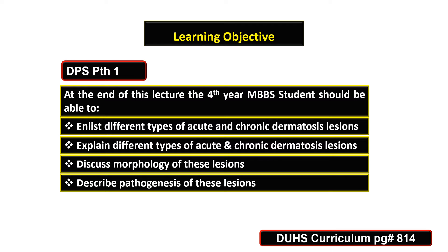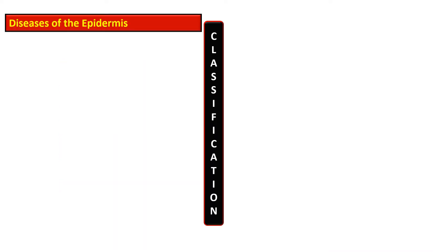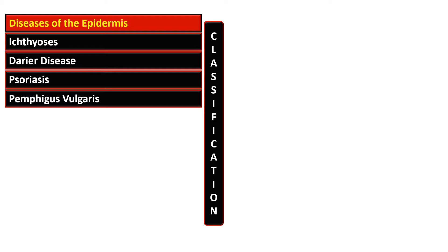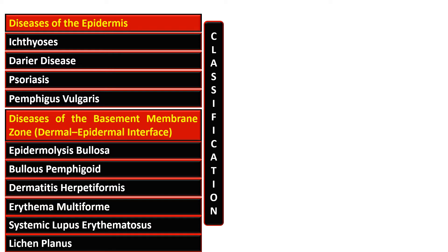And discuss pathogenesis of various types of acute and chronic dermatosis. There are many ways to classify the lesions of the skin. We will discuss two of these. They can be classified into diseases of the epidermis, and the lesions include ichthyosis, psoriasis, and pemphigus vulgaris.